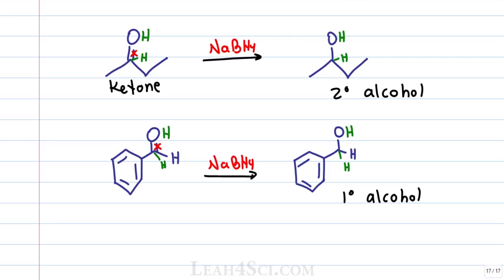Given that sodium borohydride only reacts with aldehydes and ketones, we can use it for selective reduction when the starting molecule has multiple carbonyls and we don't want to reduce them all. In this example, the starting molecule has two carbonyls, the first is an aldehyde, the second is an ester. The sodium borohydride will only reduce the aldehyde but will not touch the ester.